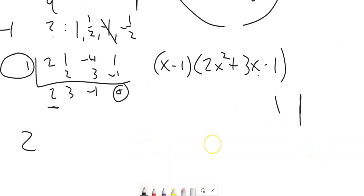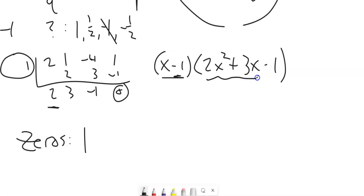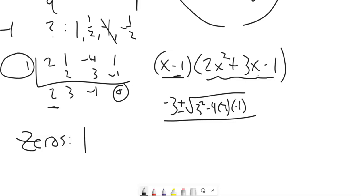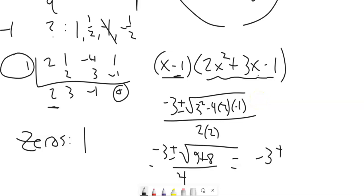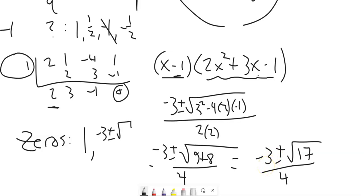One of my zeros is 1. For the remaining quadratic I'll use the quadratic formula: negative B plus or minus the square root of B squared minus 4AC all over 2A. The square root works out — negative 4 times 2 times negative 1 is positive 8 — so I get these other two zeros. Notice these are irrational: negative 3 plus or minus square root of 17 over 4. They are still actual x-intercepts and zeros; they just can't be written as simple fractions.